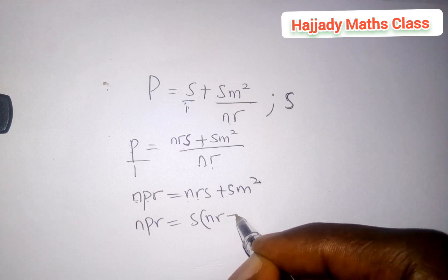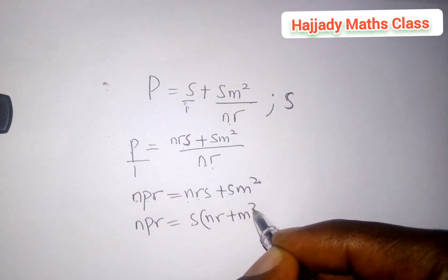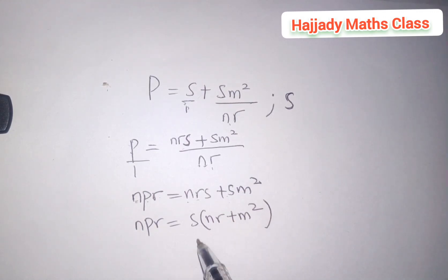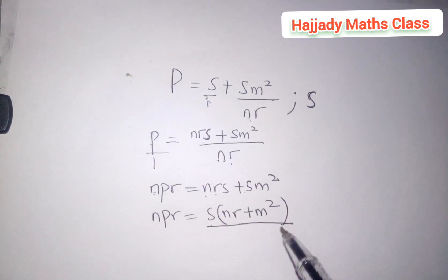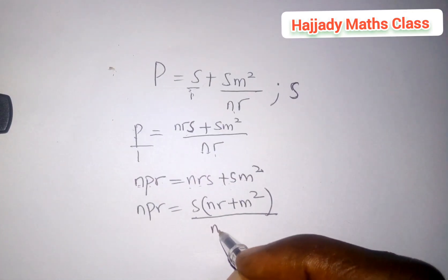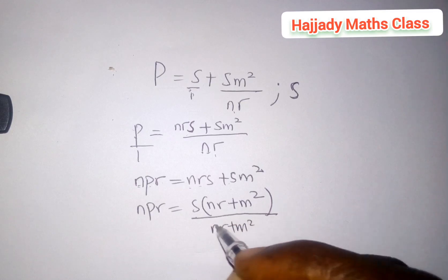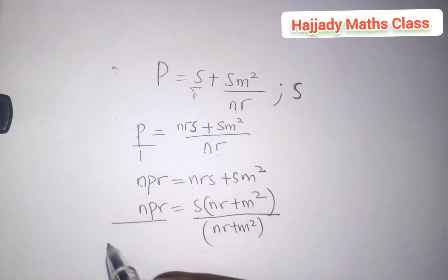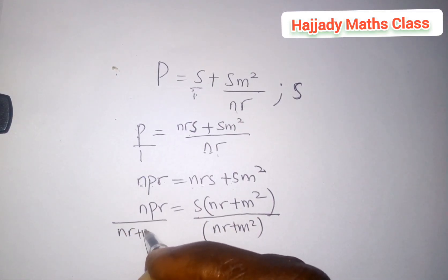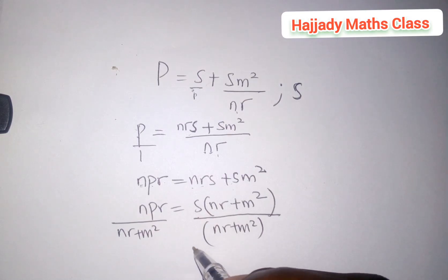And then since I'm making s the subject of the formula, let me just divide through by the coefficient of s which is nr plus m square over nr plus m square. So this can possibly cancel out this.